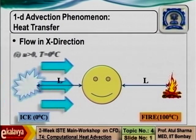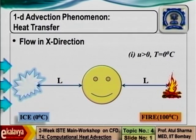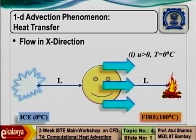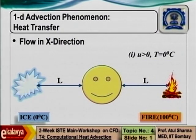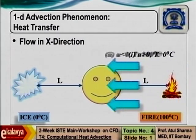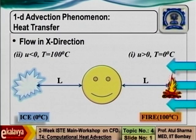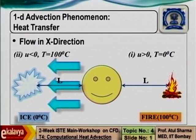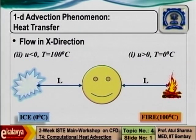If the flow is from the ice side with a very large velocity, that is what we consider as pure advection. Note that diffusion is anyway there, but it is considered as negligible. If the flow is with a very large velocity from the fire side, the temperature experienced by us is 100 degree centigrade. This is an example of pure advection in a one-dimensional situation.